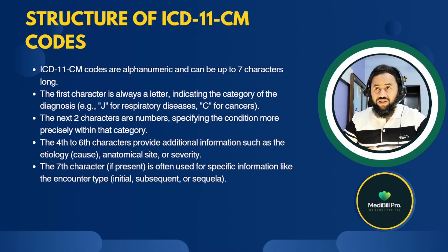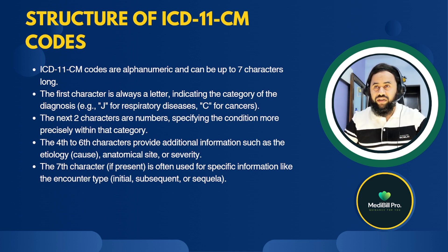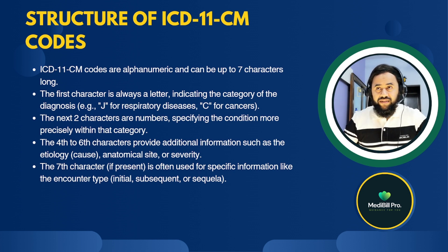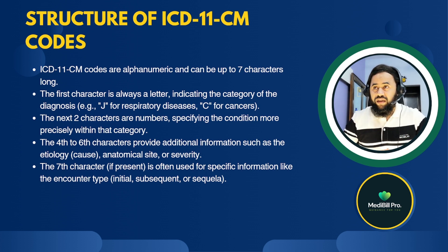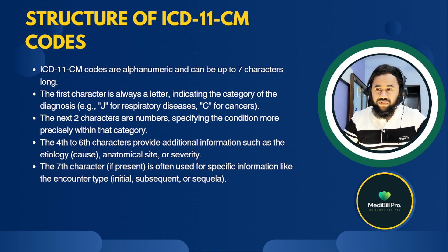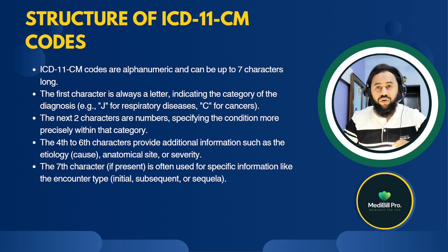Now we are going to see the structure of ICD-11-CM. ICD-11 codes are alphanumeric — they contain both alphabets and numerics — and can be up to seven characters long. These can be three, four, five, six, or seven characters. The first character is always a letter indicating the category of the diagnosis. For example, 'J' is for respiratory disease and 'C' is for cancers.